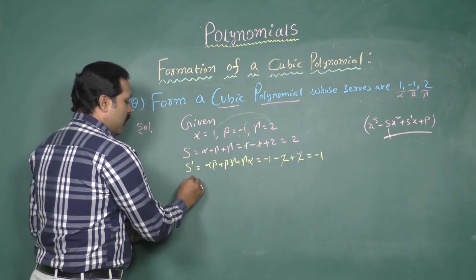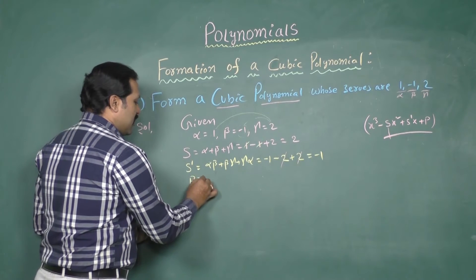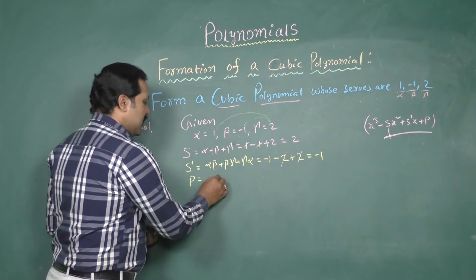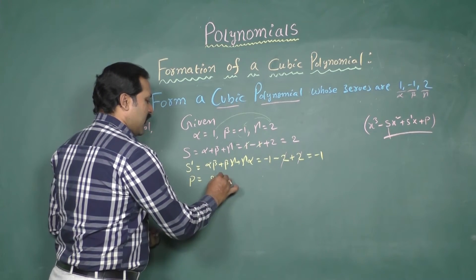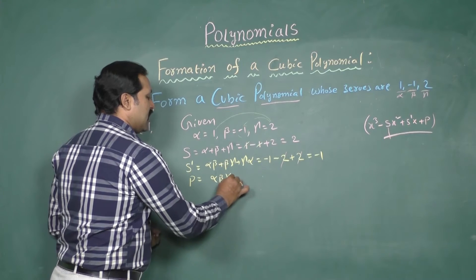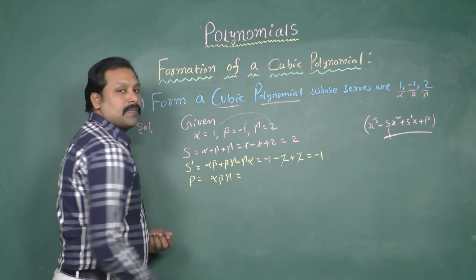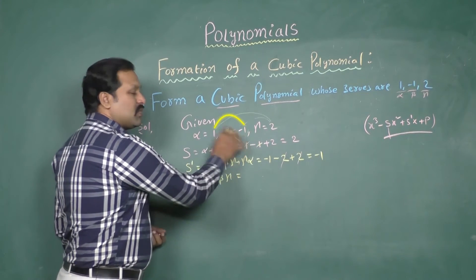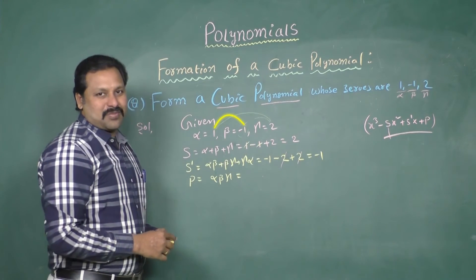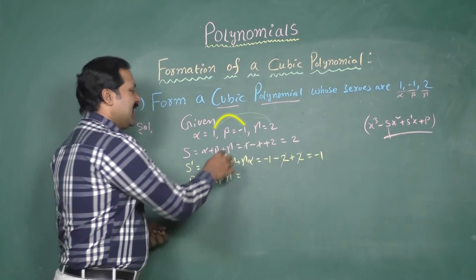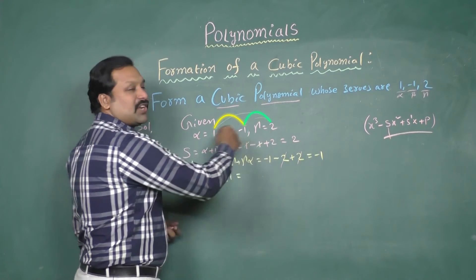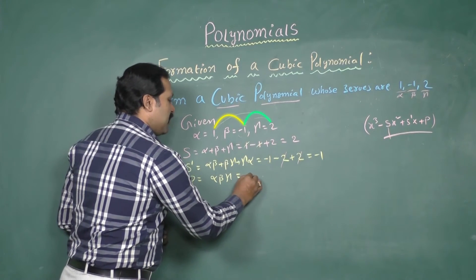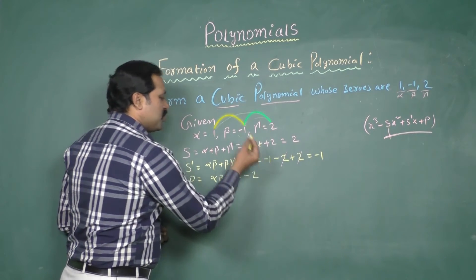Now find out the value of p. P is nothing but alpha times beta times gamma. So 1 into minus 1 gives minus 1, then minus 1 into 2 gives minus 2.